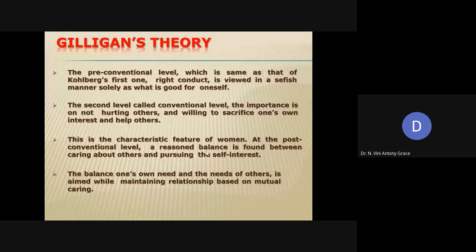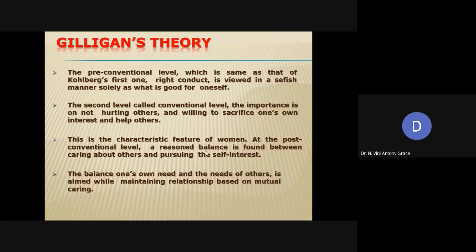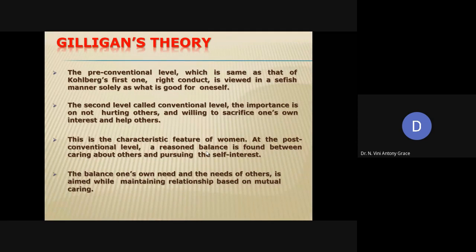Again, there are three levels: pre-conventional, conventional, and post-conventional. At the pre-conventional level, it is almost the same as Kohlberg's theory — there is a desire to satisfy one's own needs, to avoid punishment, and to obey rules. This level is found in all young children. Right conduct is viewed in a selfish manner, solely as what is good for oneself.